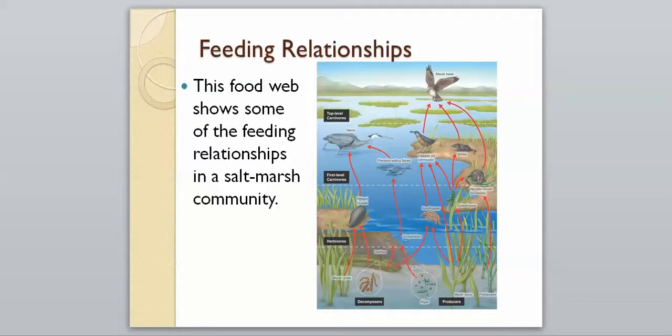This food web shows some of the feeding relationships in the salt marsh community. We have the grass that's being eaten by the sandhopper and the grasshopper, and there's a little mouse that's eating that as well. But then that mouse is also eating the grasshopper, and then the mouse is eaten by the hawk. The hawk is eating the shrew and also eating that other bird. There's just a lot more interactions than just one chain here. It's a lot more complex, showing everything that can eat everything, which is what happens inside of a food web.